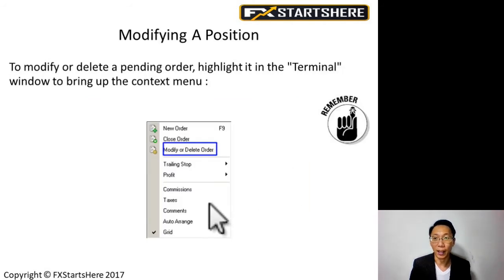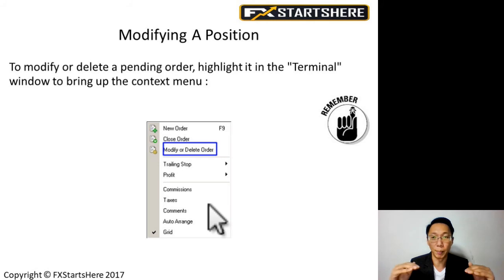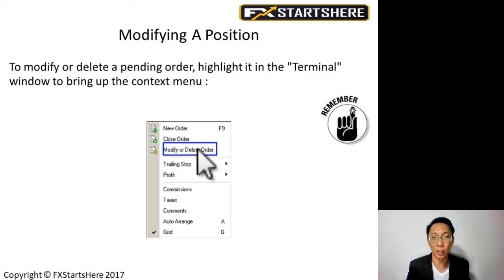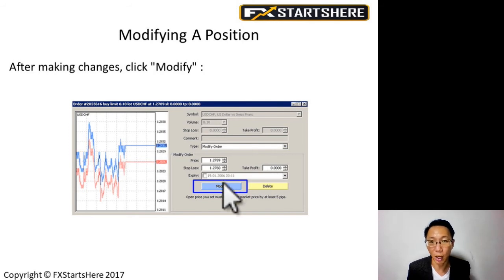To modify or delete a pending order, go to the Trade tab at the bottom of the screen where your trade will be listed. Right-click on that trade and a pop-up box appears. Click 'Modify or Delete Order', enter your stop loss and take profit, then click Modify — your order will be updated with those levels.